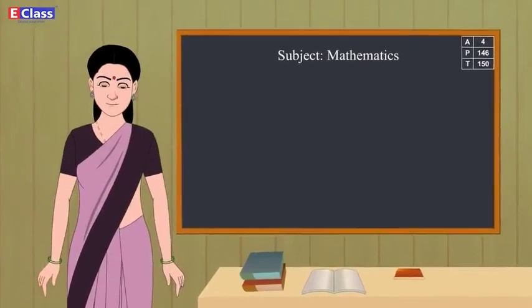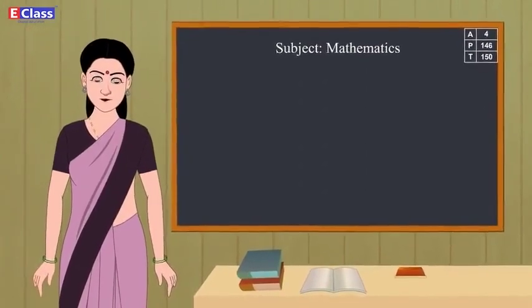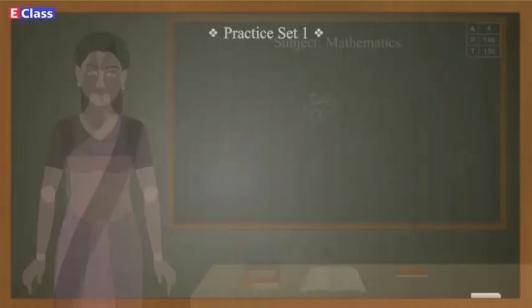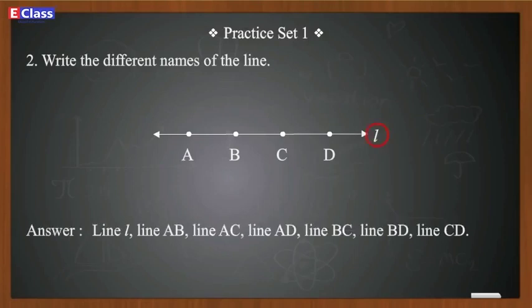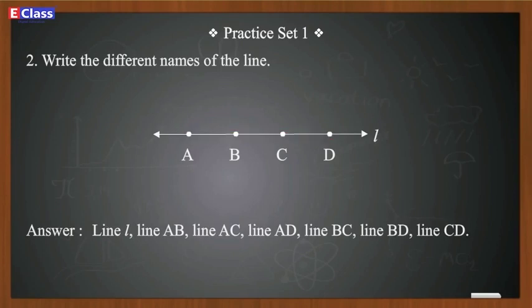Four — lines: line MT and line RN. Students, let's solve question two of practice set 1.1. Write the different names of the line. Answer: line L, line AB, line AC, line AD, line BC, line BD, line CD.